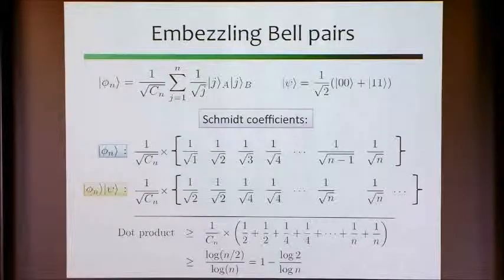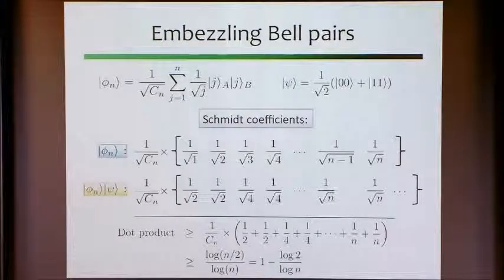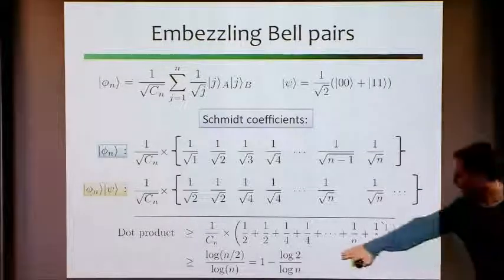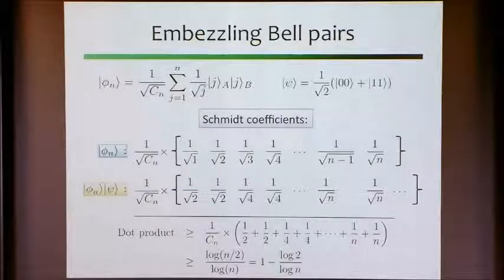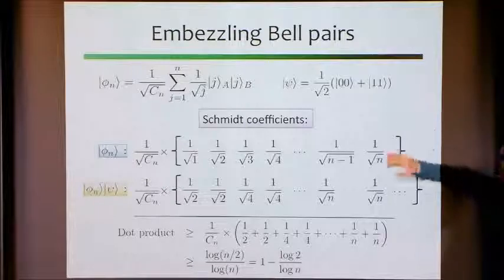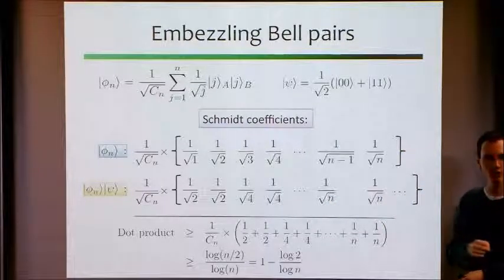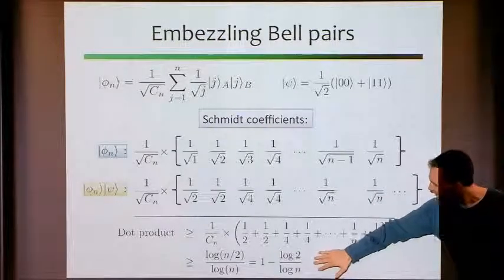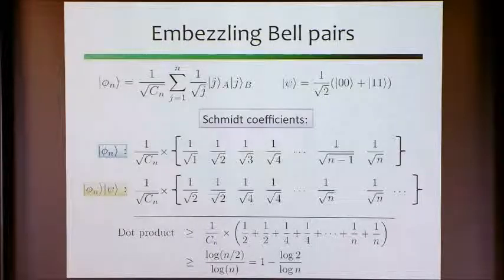We pick up 1/C_N² · (sum of terms). The inner product gives: 1/2 + 1/2 = 1 for the first pair; 1/4 + 1/4 = 1/2 for the next; and so on up to 2/N. This inner product is bounded below by another harmonic sum — roughly log(N/2), giving a lower bound of log(N/2)/log(N), which is about 1 − log(2)/log(N). And log(2) here is exactly the Schmidt rank of our target state — that's the role it's playing. It turns out the maximally entangled state is the hardest to embezzle physically, but actually the easiest to illustrate mathematically.